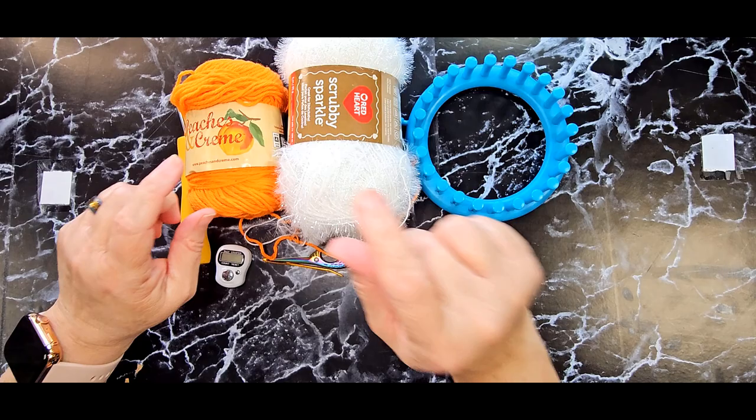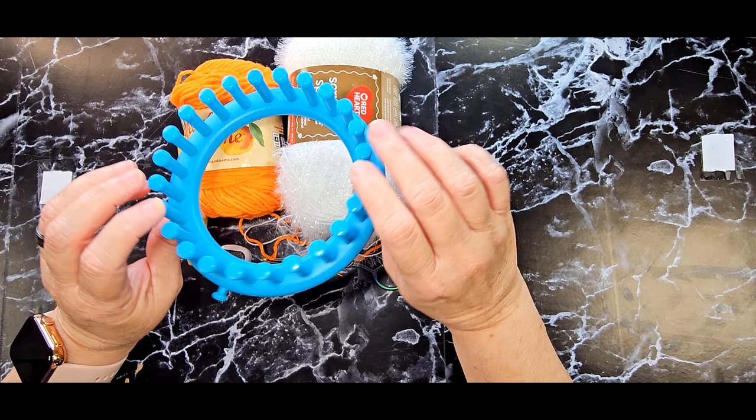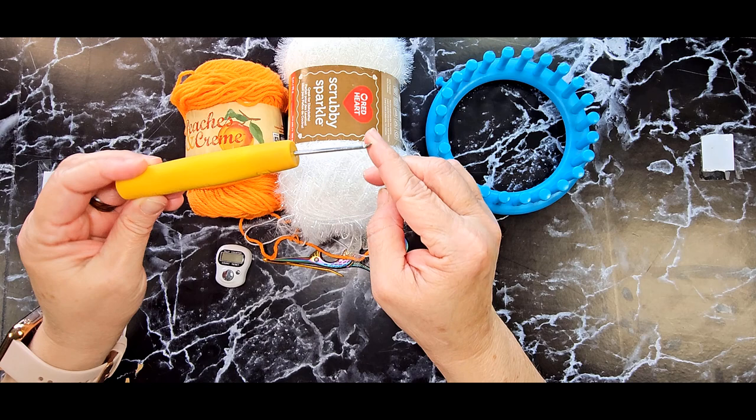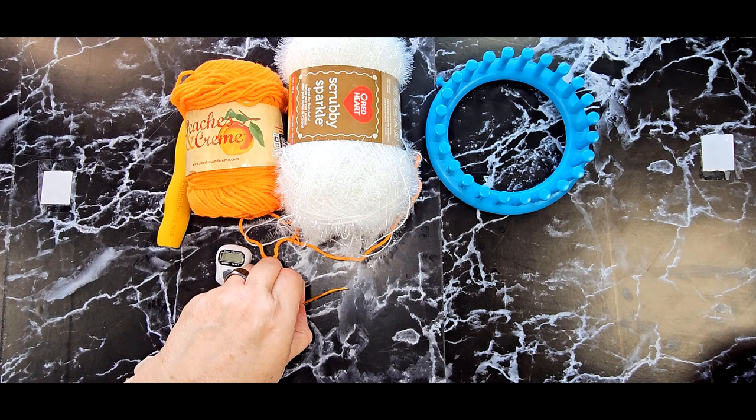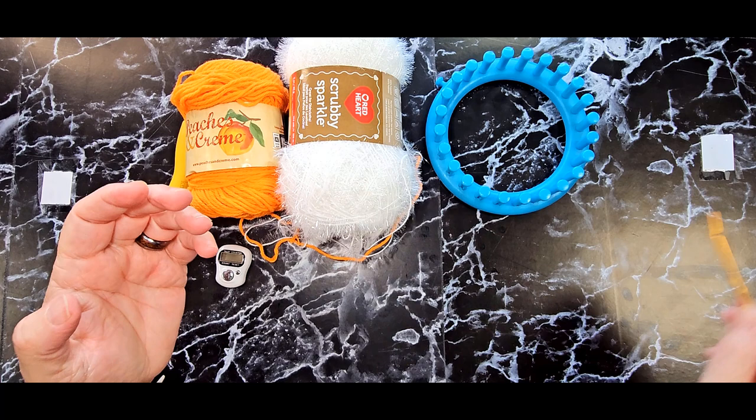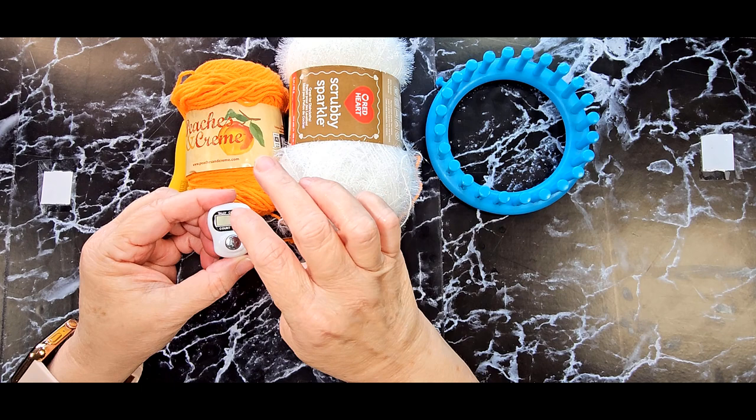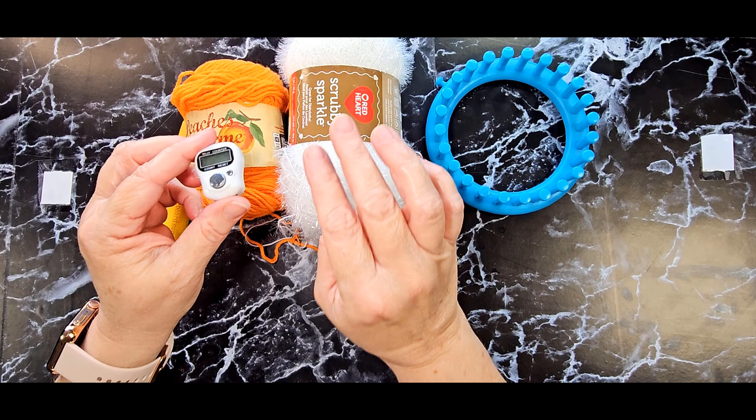The tools that you will need is of course your loom and you need a 24 peg loom like this one. You'll need your loom pick, you'll need a pair of scissors, you'll need a darning needle to stitch it all together at the end and I suggest you have a way to keep track of your rows. I have a tally counter but you can use paper and pen whatever you want to use.